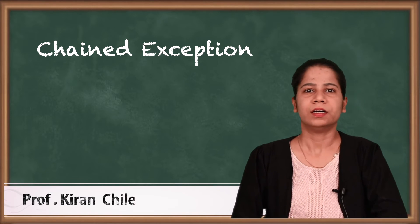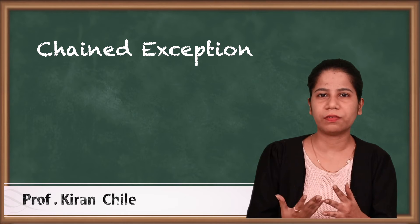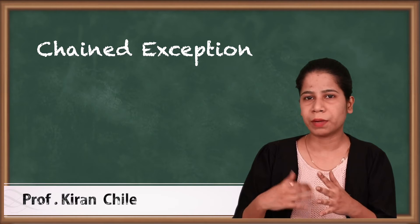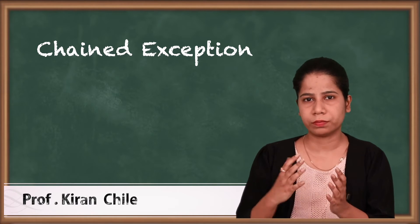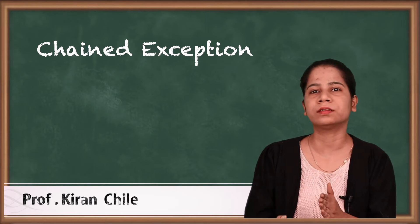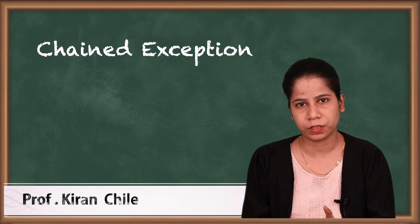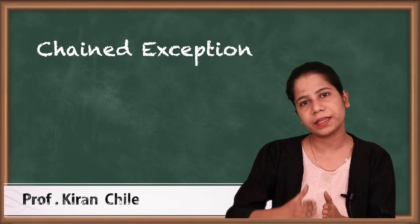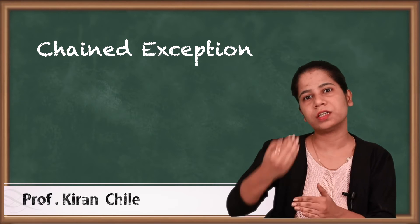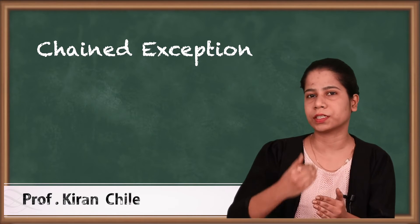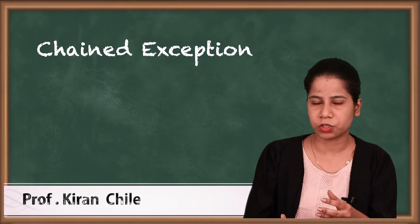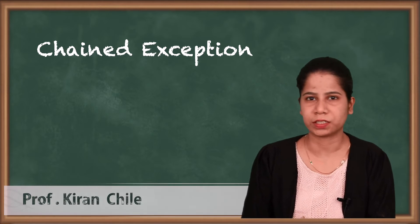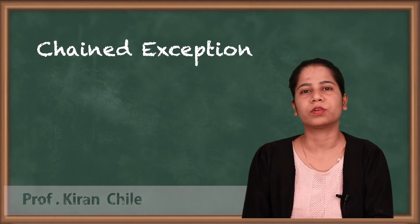Now what do you mean by that? Basically, to give a rough idea, if I am having a particular exception in my program and it got caught, it may be possible that that's not the real reason behind the exception. It may be possible that some situation happened and because of that some other exception occurred, which caused a totally different exception that came into the picture and got caught. To handle such a situation, we have chained exceptions.